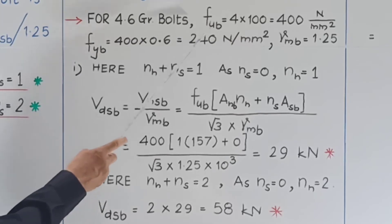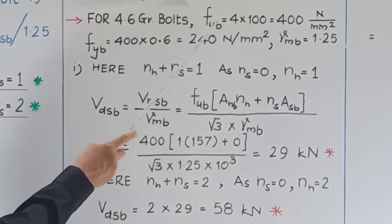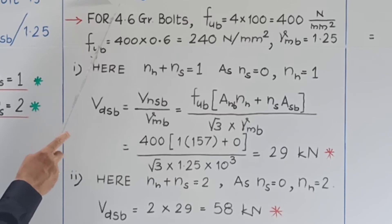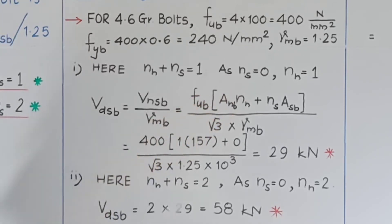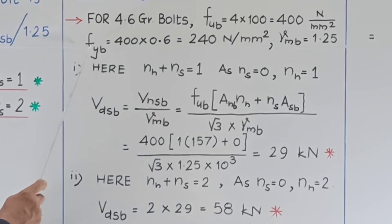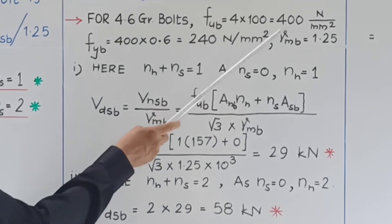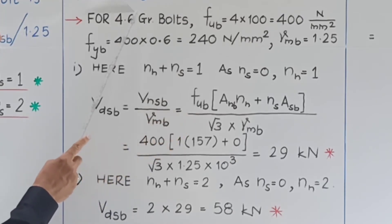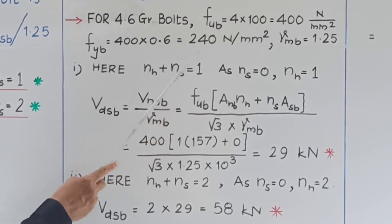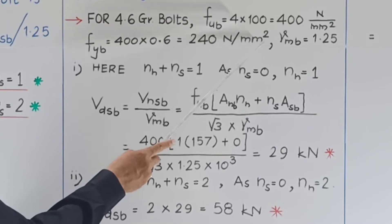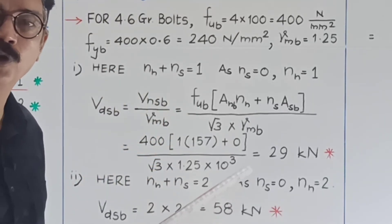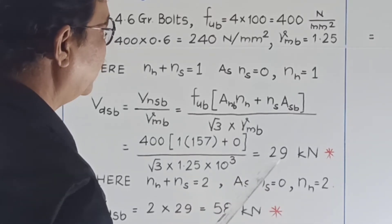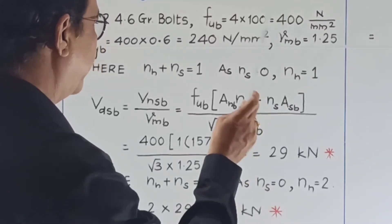Given grade 4.6 bolts: f_ub (ultimate stress) = first digit × 100 = 400 N/mm². f_yb (yield stress) = 400 × 0.6 = 240 N/mm². The partial factor of safety for the material of the bolt is γ_mb = 1.25.